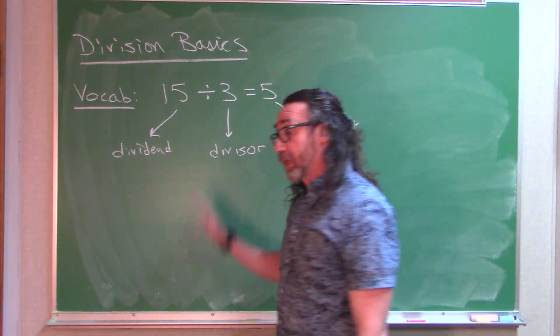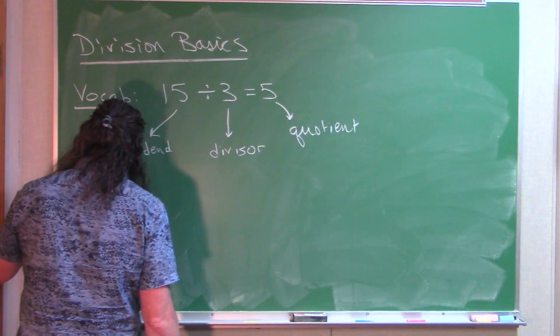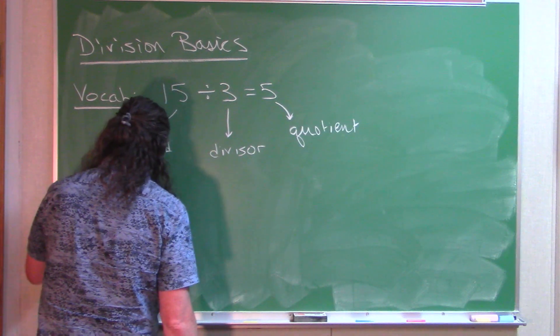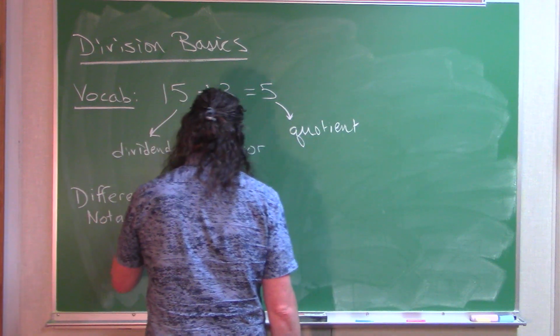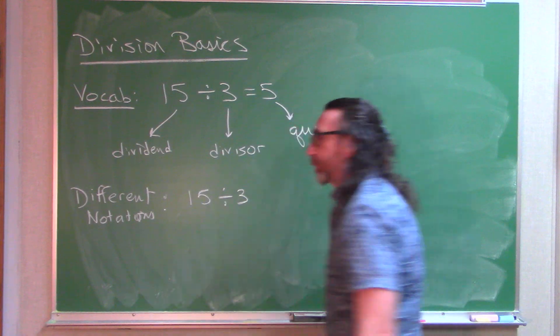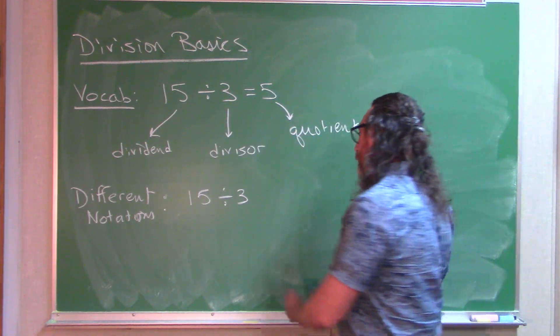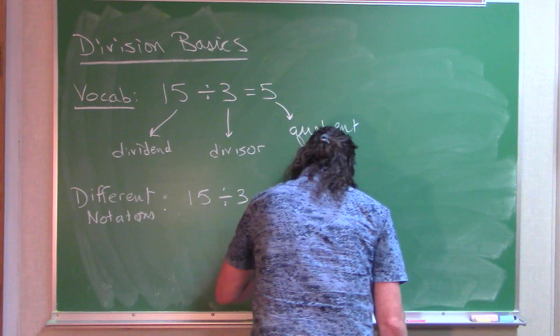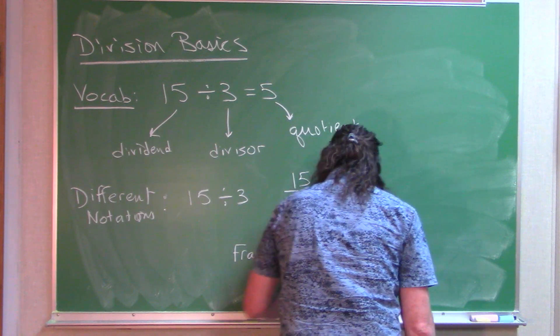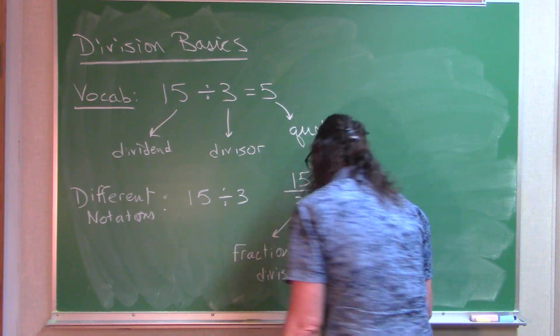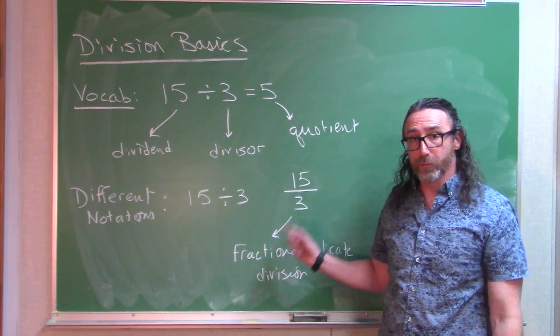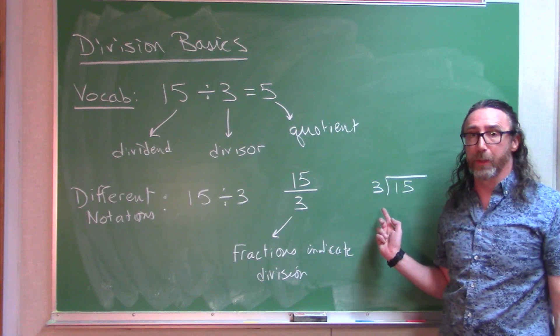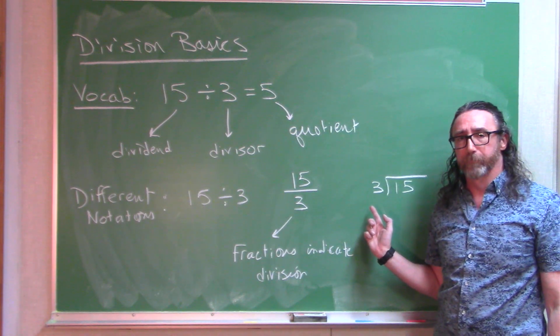And there are a couple of ways that we can actually indicate the operation of division. We could use the standard division symbol that I used up here, 15 divided by 3. We could use a fraction. So something kind of important to keep on your toes here - fractions indicate division. Or, we could use the long division setup, which we will go over a little bit more as the section progresses.